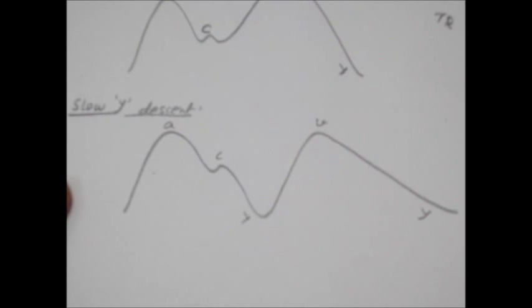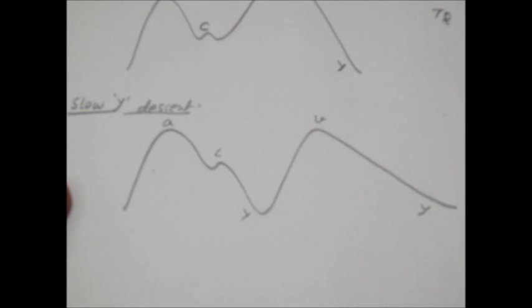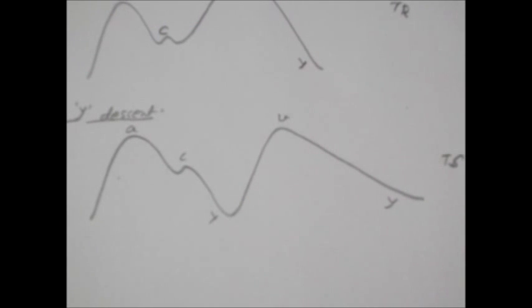If there is obstruction due to tricuspid stenosis, the blood will flow slowly from right atrium to right ventricle because of the less opening of the valve.